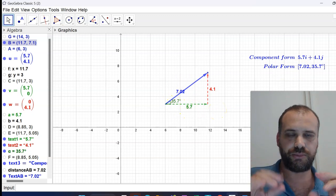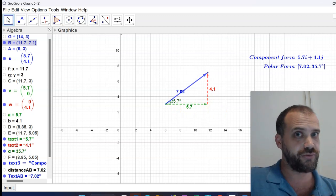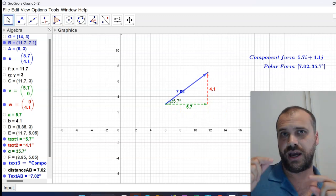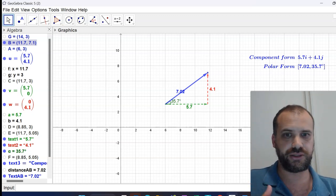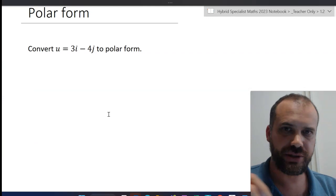So that is polar form, a magnitude and a direction and the direction is based on the positive direction of the x-axis. Now that we understand what polar form is, let's convert from component form to polar form mathematically and then convert from polar form to component form mathematically.